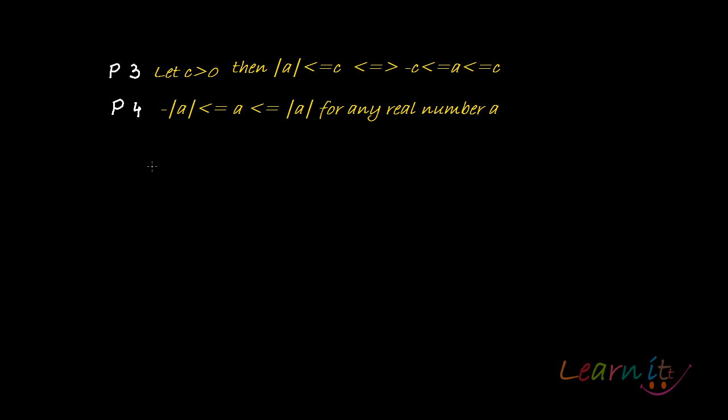Let's look at two important properties of absolute value. We've already seen two properties, so now we're looking at property number 3 and 4.